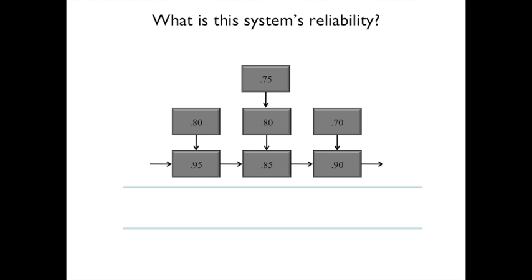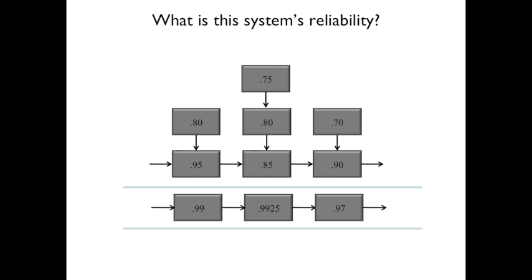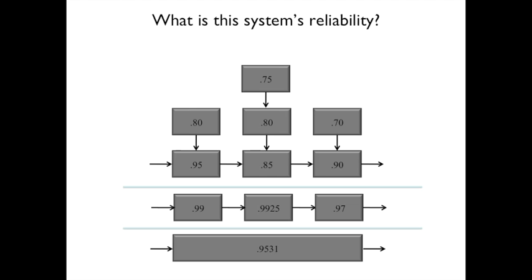Here's an example with both series and parallel probability. The first item has 0.95 reliability with a backup of 0.80; the next has 0.85 with backups of 0.80 and 0.75; and another component has 0.97. Using the redundancy rule: the first group calculates to 0.99, the second group to 0.9925, and the third is 0.97. Multiplying these together — 0.99 × 0.9925 × 0.97 — gives approximately 95% overall system reliability.